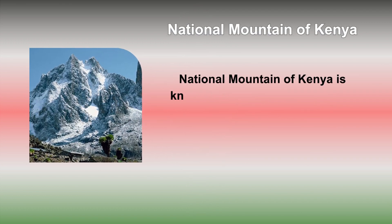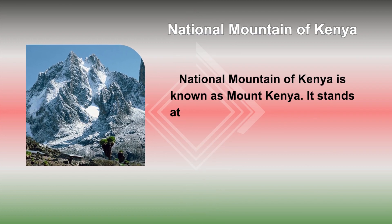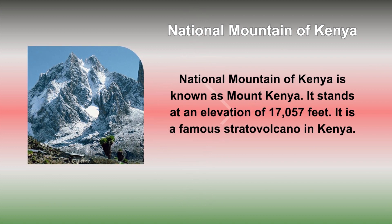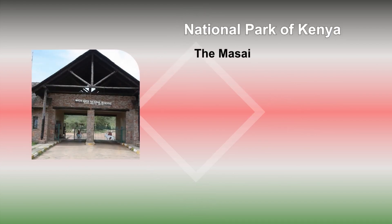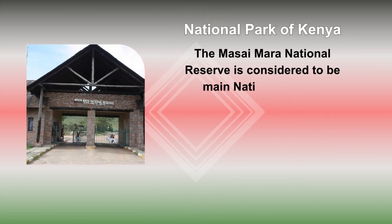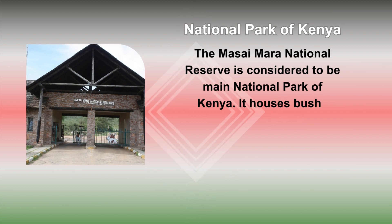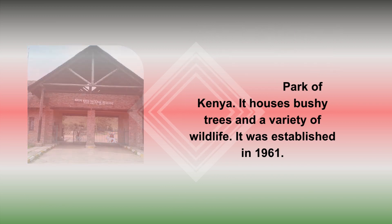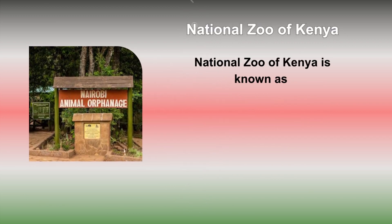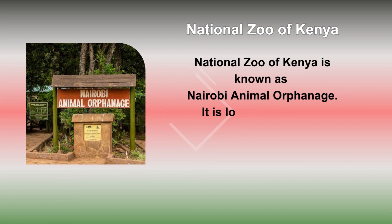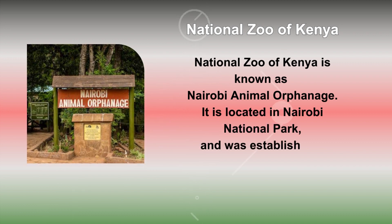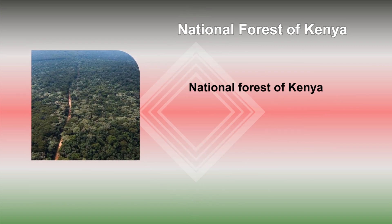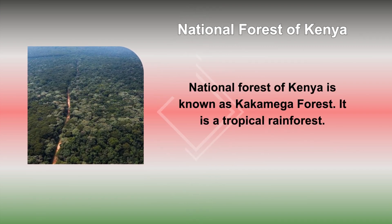The National Mountain of Kenya is known as Mount Kenya. It stands at an elevation of 17,057 feet and is a famous stratovolcano in Kenya. The Maasai Mara National Reserve is considered to be the main national park of Kenya. It houses bushy trees and a variety of wildlife, and was established in 1961. The National Zoo of Kenya is known as Nairobi Animal Orphanage, located in Nairobi National Park and established in 1964. The National Forest of Kenya is known as Kakamega Forest, a tropical rainforest.